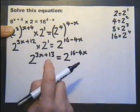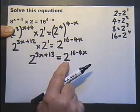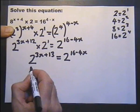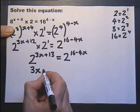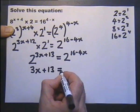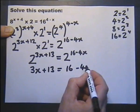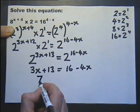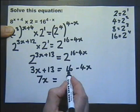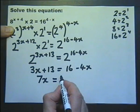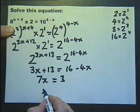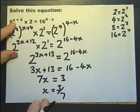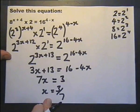Now, if we've got 2 raised to the power of something equals 2 raised to the power of something, then these two powers must be the same. So we write down that they're equal and solve the equation. Adding 4x to both sides, subtracting 13 from both sides, dividing both sides by 7, we have solved and found this unknown value is 3 sevenths.